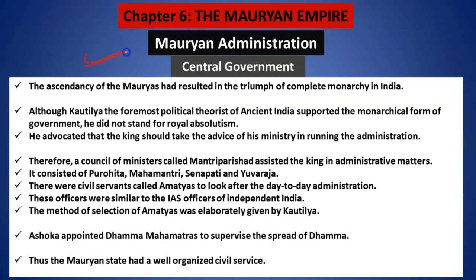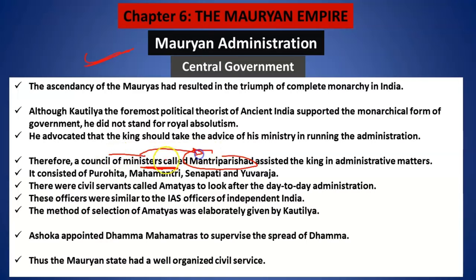Now let us quickly understand the Mauryan administration. Kautilya had very clearly mentioned about the administration in his book. There was a council of ministers under the king, known as Mantri Parishad. They were Purohit, Mahamantri, Senapati, Yuvaraj. That time also they had civil servants for taking care of districts, known as Amatyas — just as right now you want to become an IAS officer. How they were selected is also given elaborately by Kautilya in his Arthashastra.